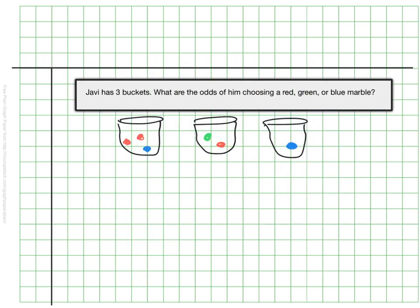In the other example that we're going to look at here, Javi has three buckets, and let's say we don't know which bucket he's going to choose or which marble he's going to choose, and we want to find the odds of him choosing either a red, green, or blue marble. So again I'm going to start by making an area model by making a quick rectangle.